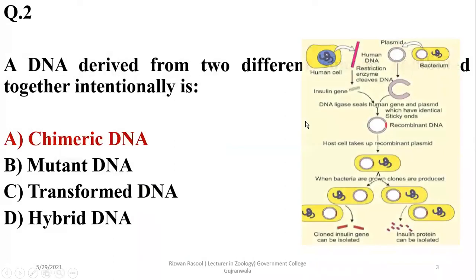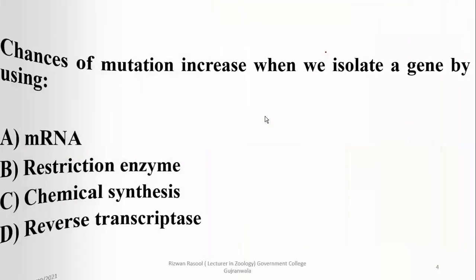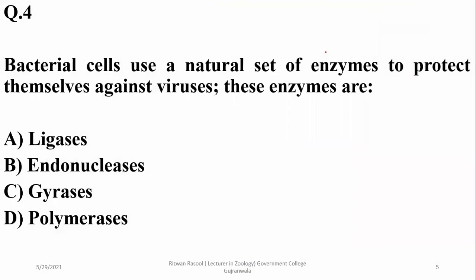DNA derived from two different sources combined together intentionally is chimeric or recombinant DNA, so alpha — as you can see where bacterial and human genes have been combined — forms a recombinant DNA. Chances of mutation increase when we isolate the gene by using chemical synthesis, so Charlie.